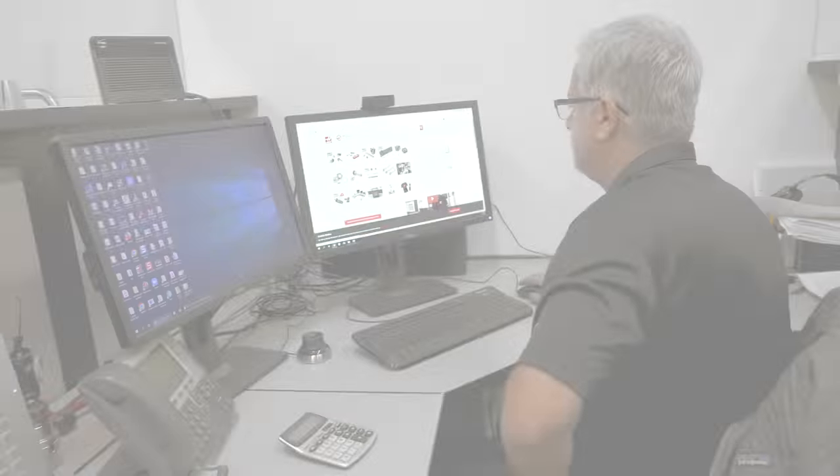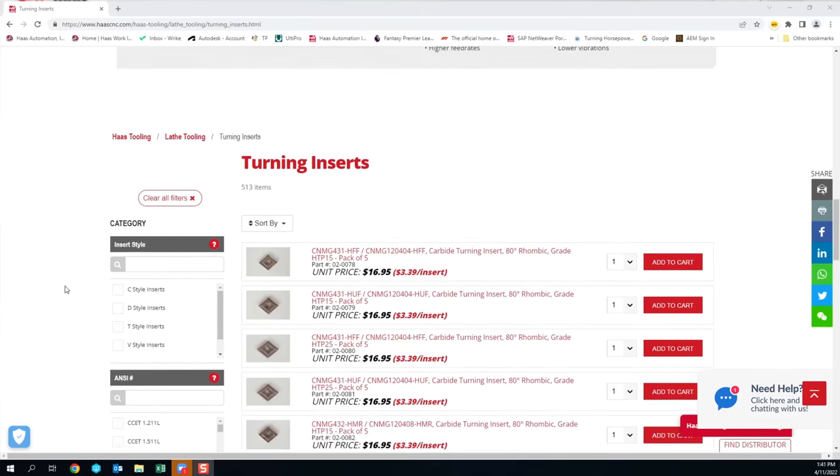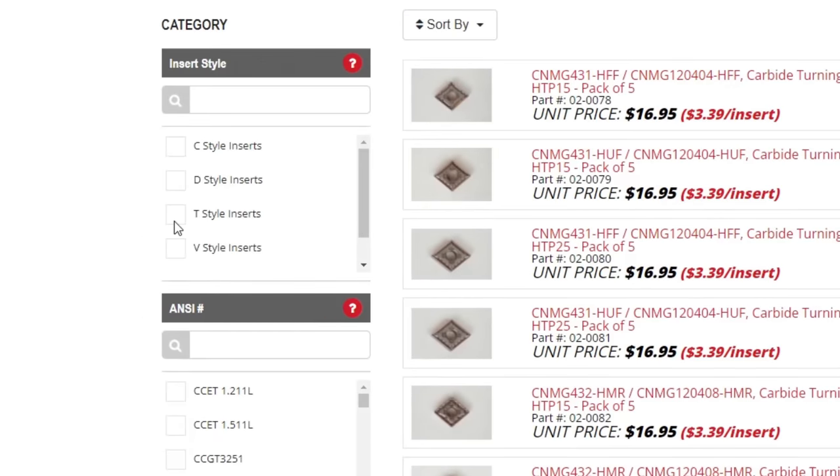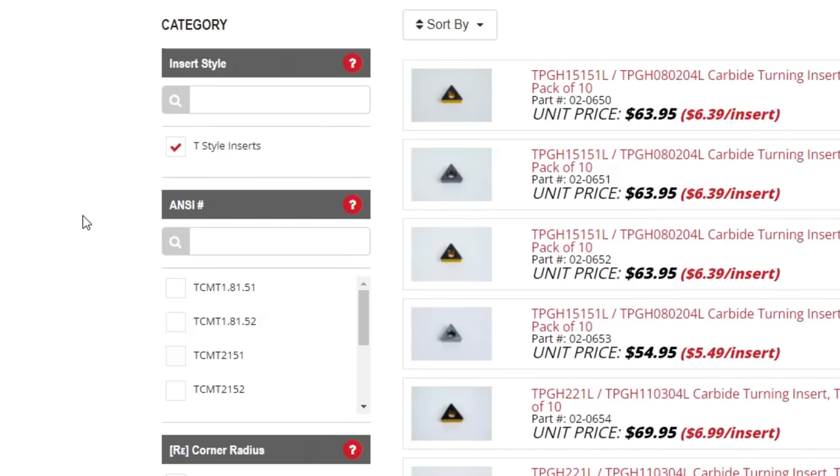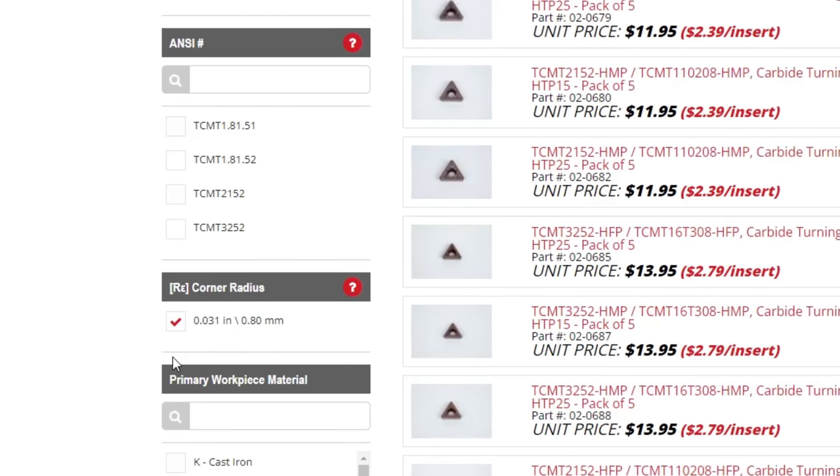We also need the insert cutting data for the template. So let's head to Haas Tooling and go get that info and also show why we came up with this insert for this presentation. I'm on the turning insert page of haastooling.com. As we go down the VPS template later, you will see why I chose this T-shape insert. Next, I'll select the corner radius of 0.8mm.